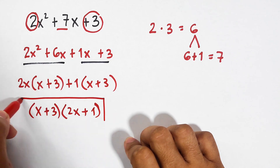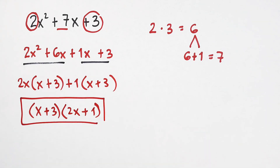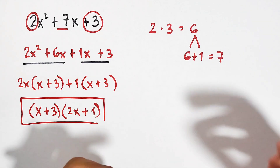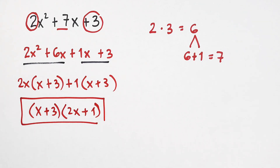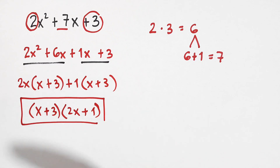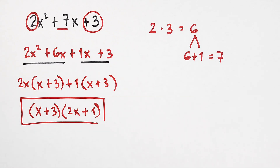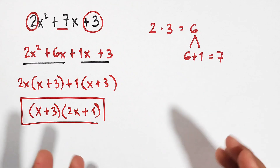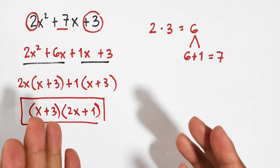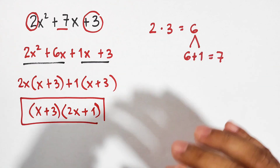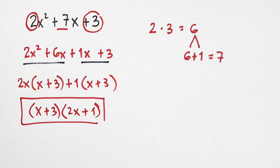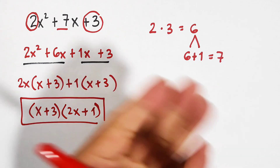That is the easiest way to factor out trinomials in which the coefficient of the leading term is 1 or greater than 1. I hope you learned something from this video. If you're new to my channel, don't forget to like and subscribe, and hit the bell button to be updated on our latest uploads. Again, it's me, Teacher Gone — maraming maraming salamat. Bye-bye!